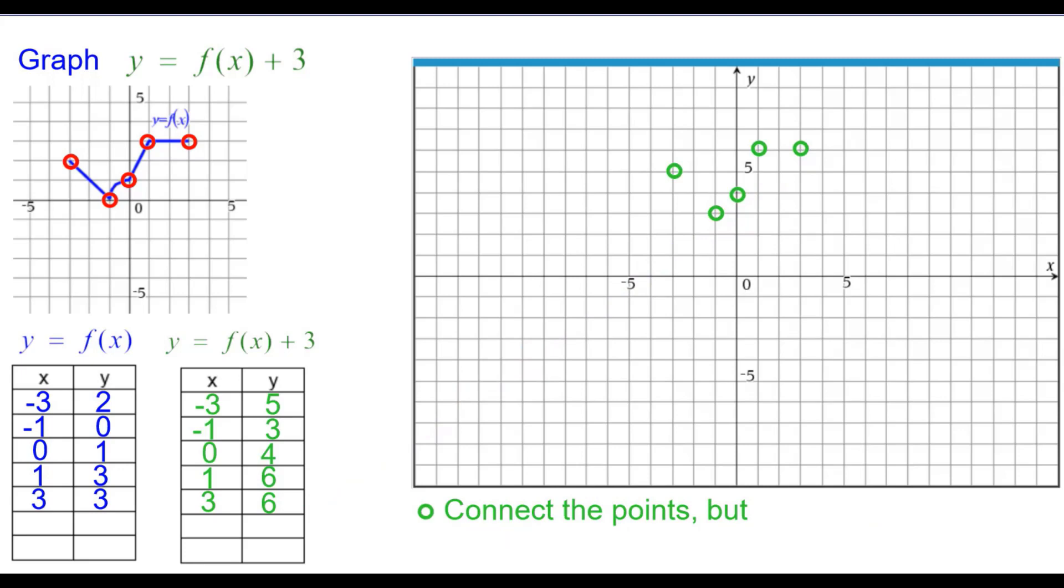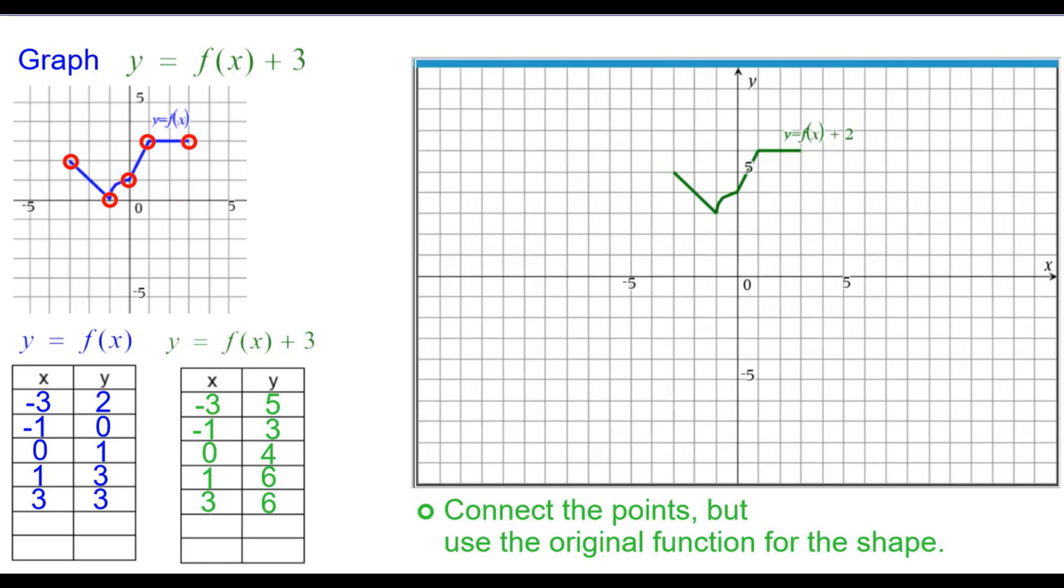So when we check the points, keep in mind what the original function looked like, whether they're straight segments or curves. We want to make sure we do that properly. And this is what y equals f of x plus 2 looks like.